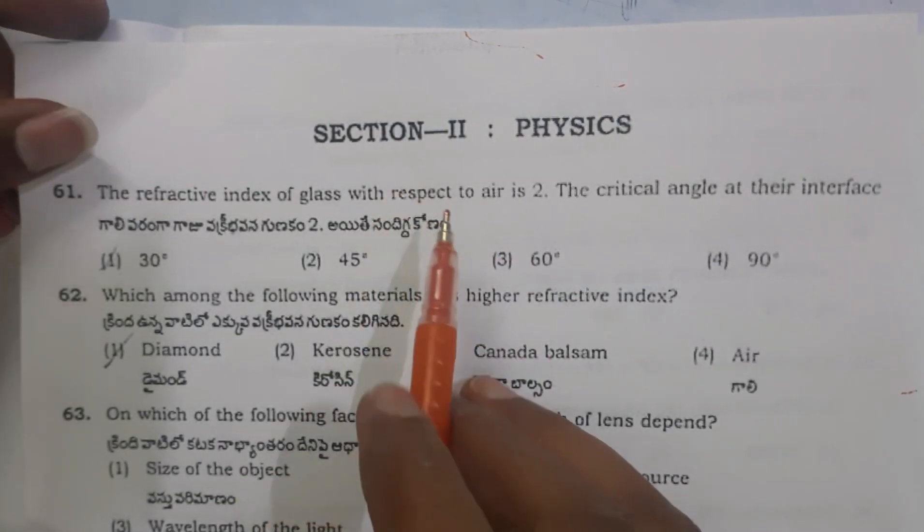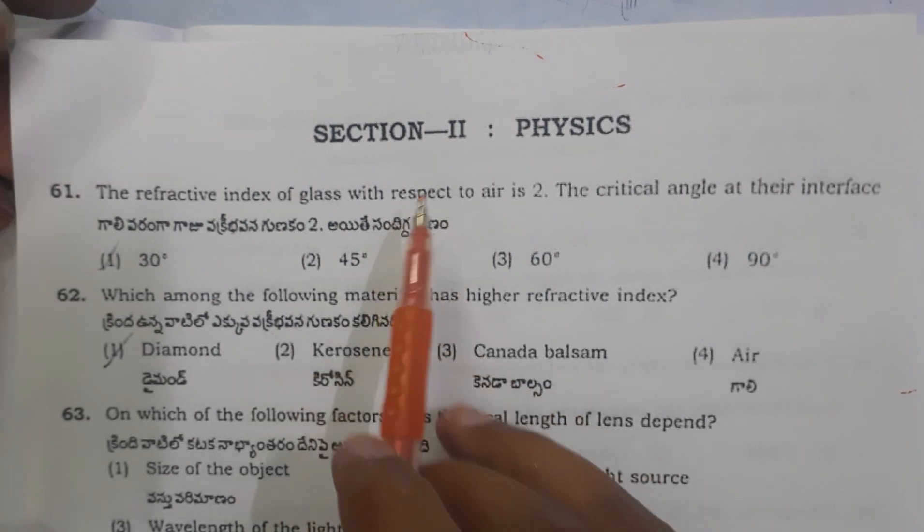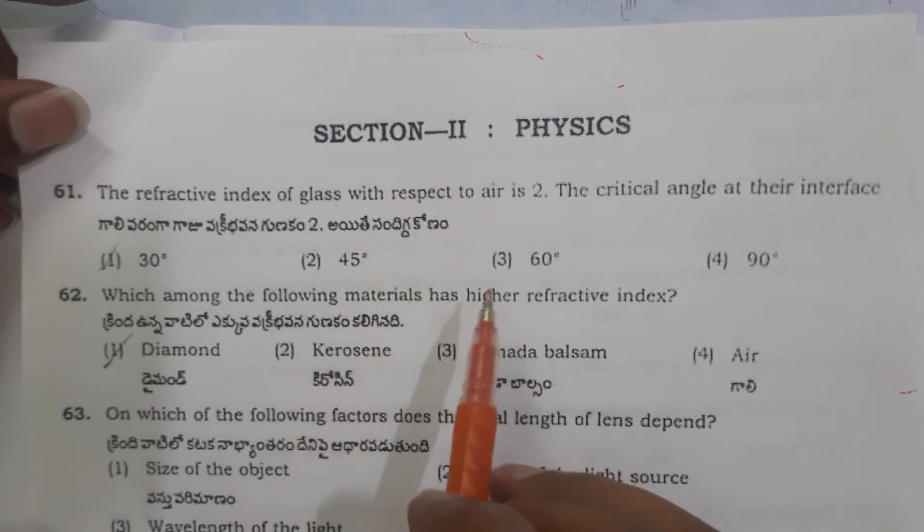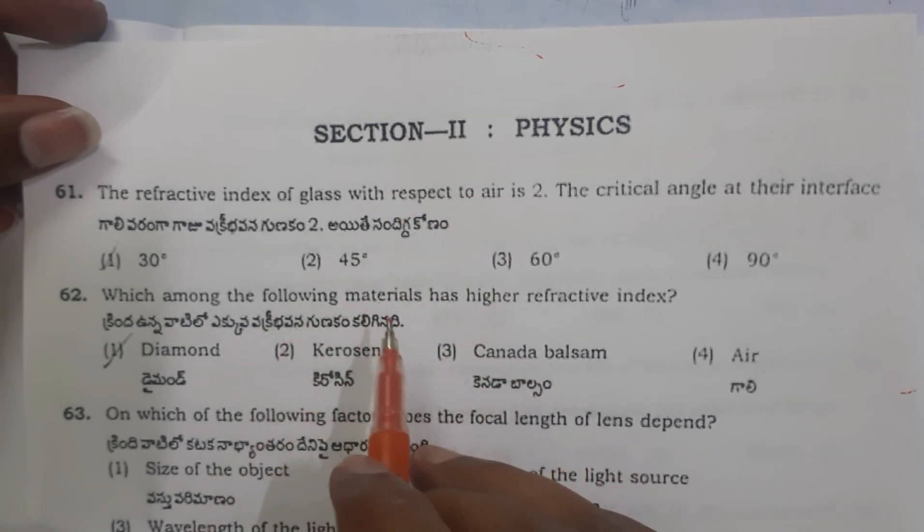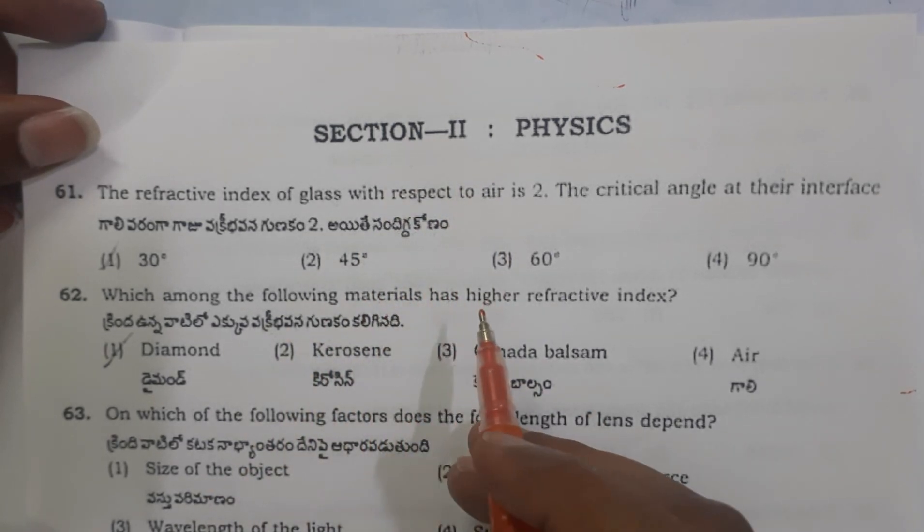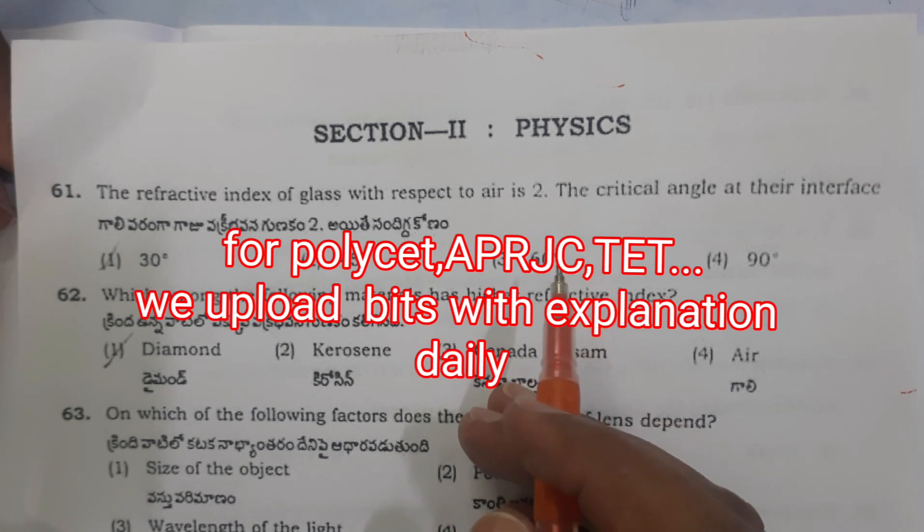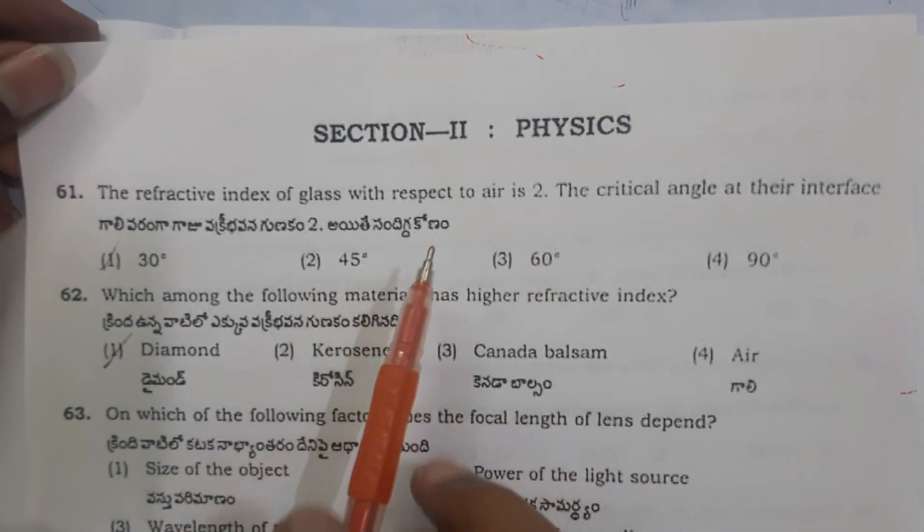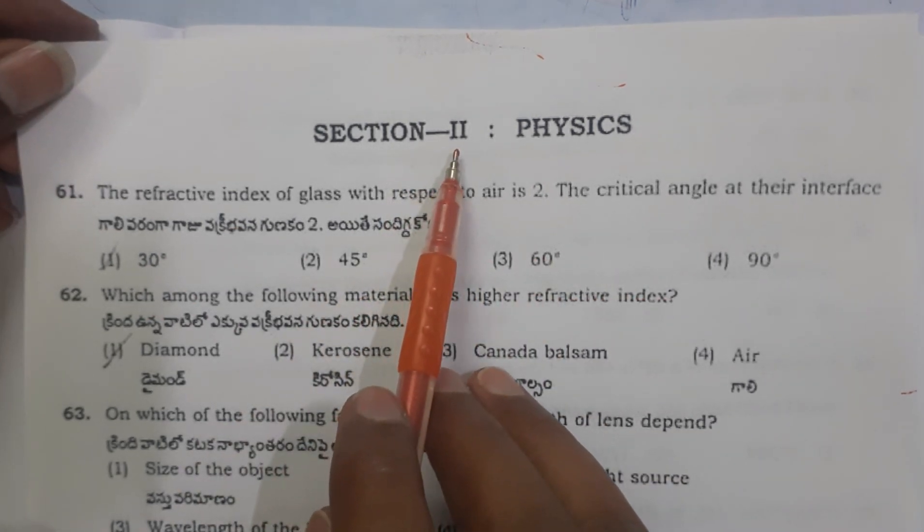This is Polycet 2019 examination paper, part 2, section 2 physics. We are going to explain the solutions. Every day we explain at least five bits from previous Polycet examination papers of physics and chemistry.